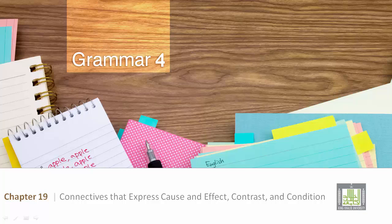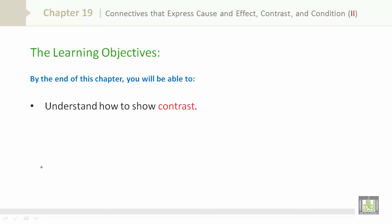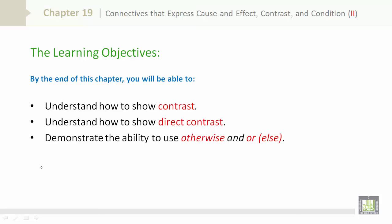Connectives that express cause and effect, contrast, and condition. The learning objectives: by the end of this chapter, you will be able to understand how to show contrast, understand how to show direct contrast, and demonstrate the ability to use 'otherwise' and 'or else'.